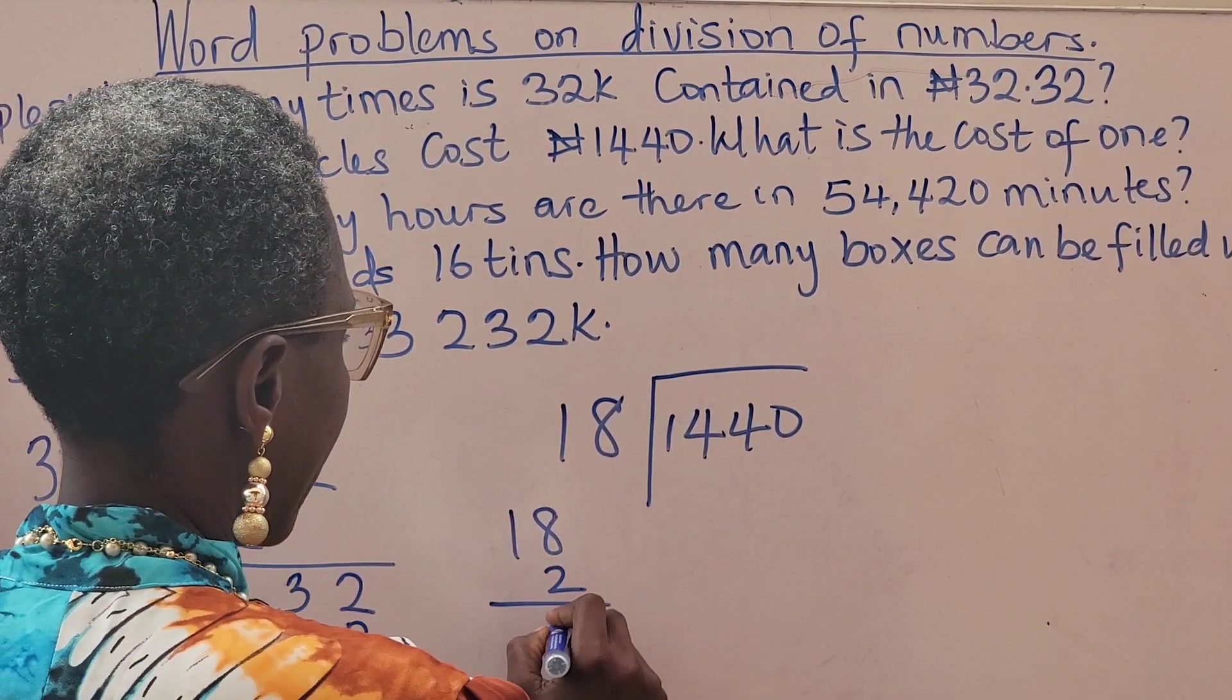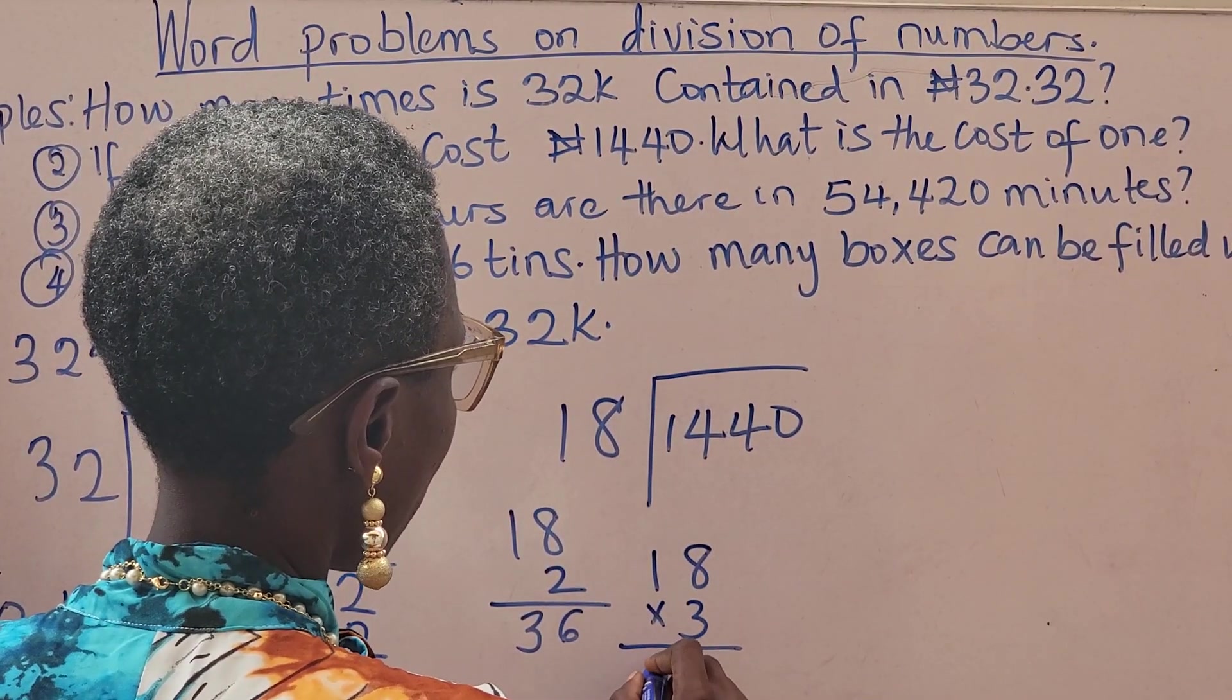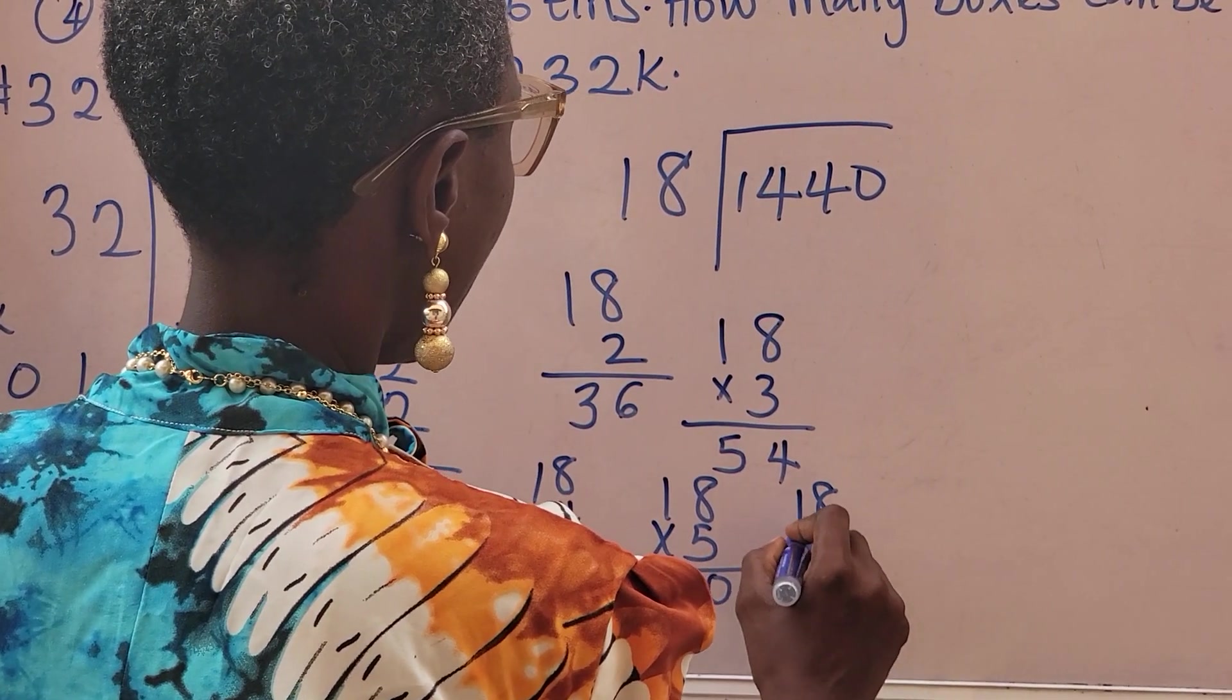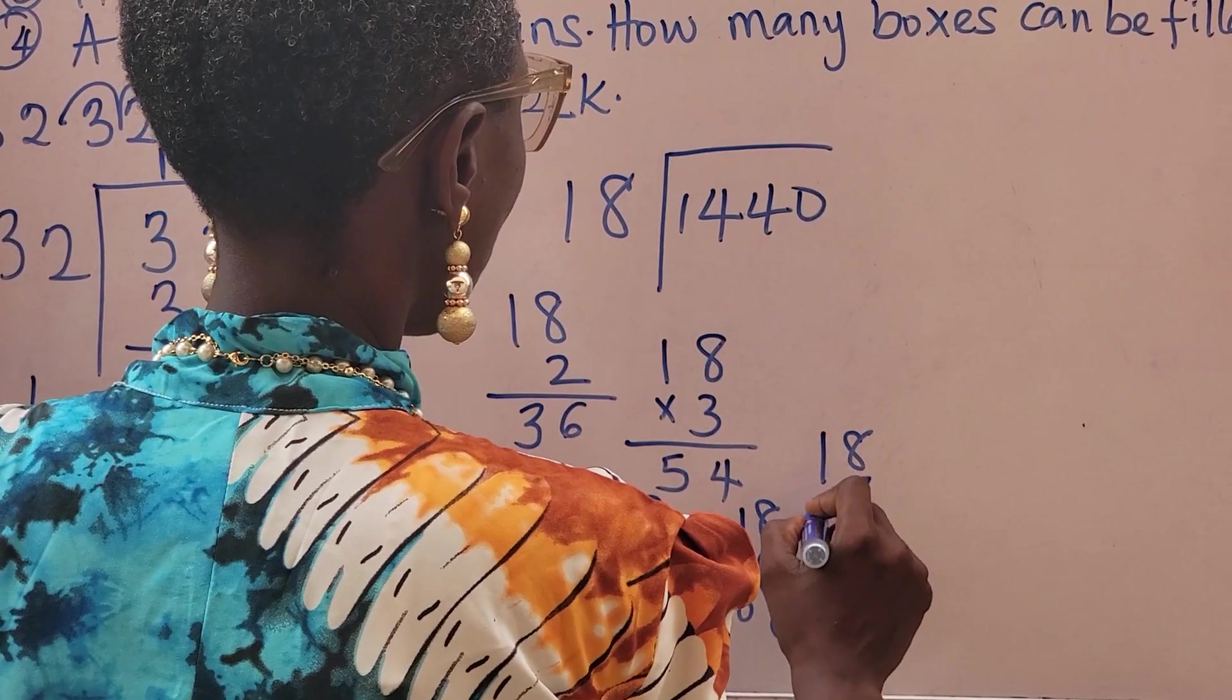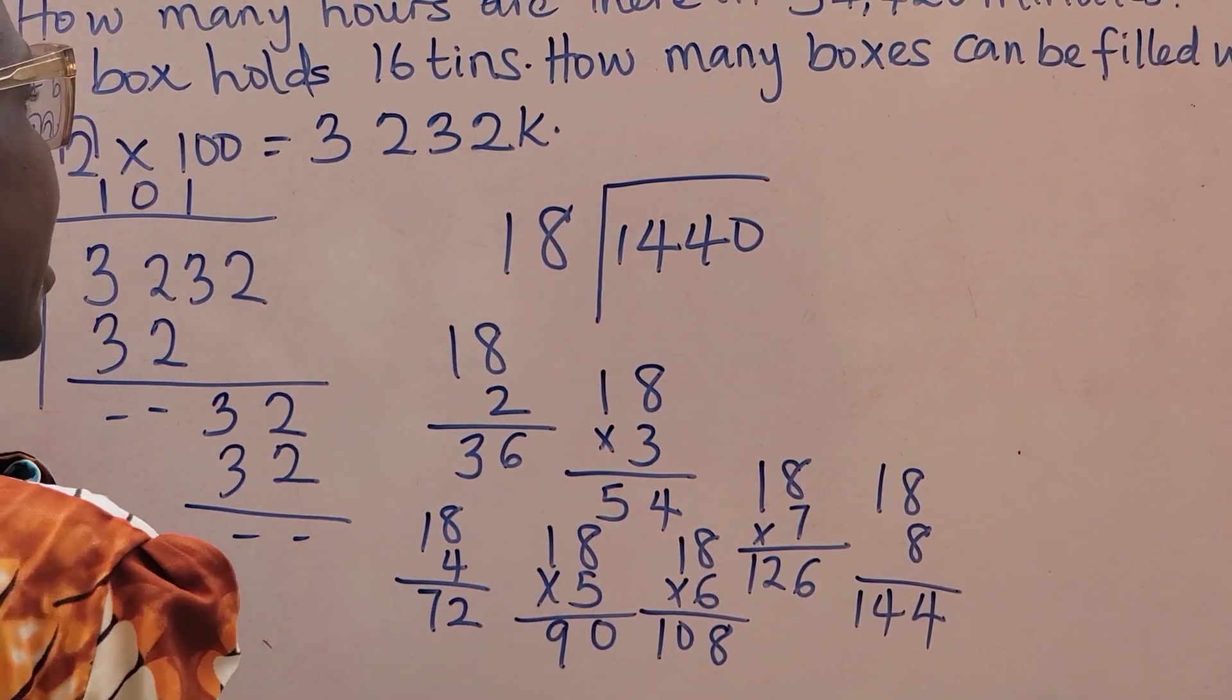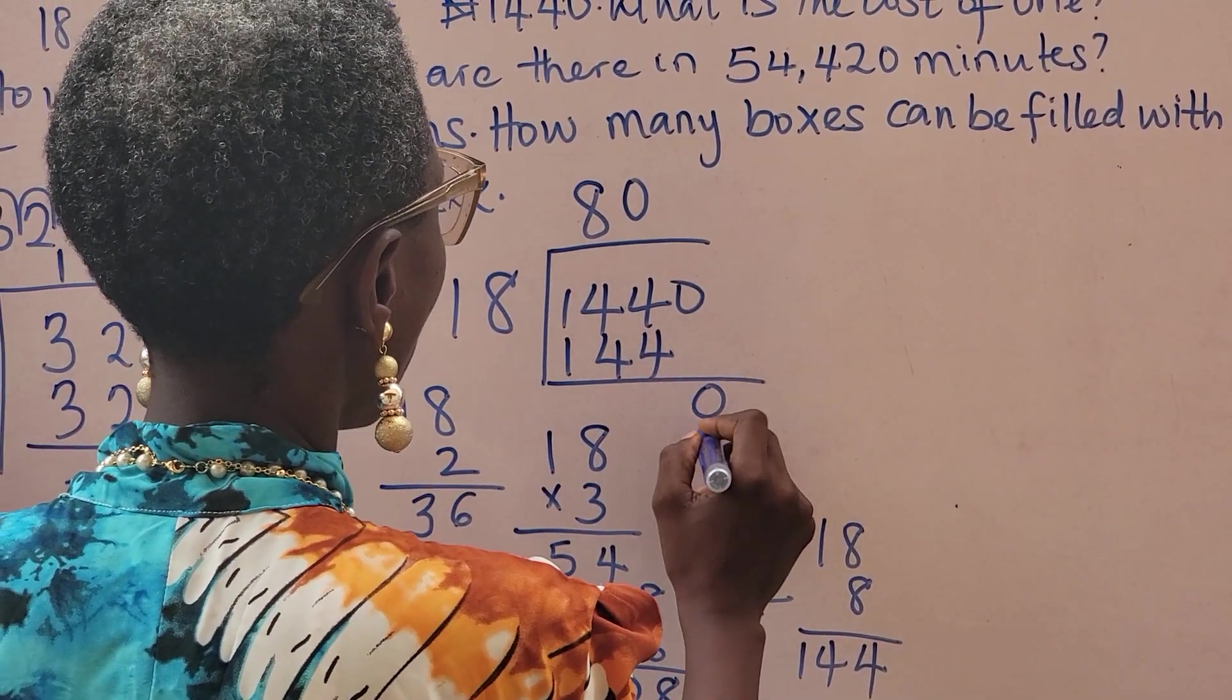14 cannot divide, so do your multiplication table. 18 times 1 is 18, 18 times 2 is 36. Let's keep going: 18 times 3 is 54, 18 times 4 is 72, 18 times 5 is 90, 18 times 6 is 108, 18 times 7 is 126. Let's keep up: 18 times 8 is 144.